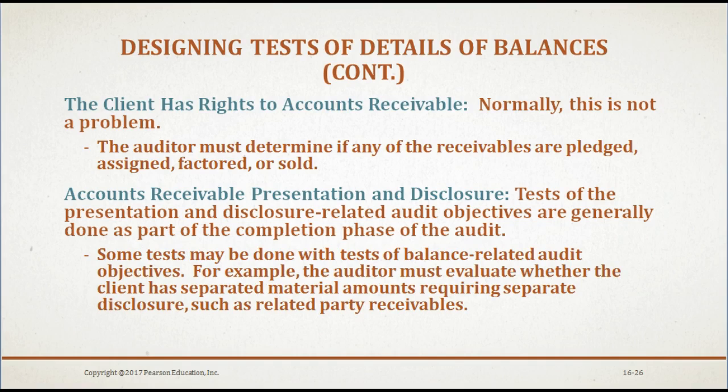The client's rights to accounts receivable is normally not a problem. The auditor must determine if any receivables are pledged, assigned, factored, or sold by the client. The test of presentation and disclosure-related audit objectives are generally done as part of the completion phase of the audit, though some tests may be done with the test of balance-related objectives. For example, the auditor must evaluate whether the client has separated material amounts requiring a separate disclosure, such as a related party receivable.